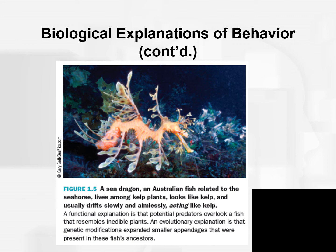One more example, because it comes with a neat picture of a sea dragon — an Australian fish related to the seahorse. It lives among kelp plants, looks like kelp, and usually drifts slowly and aimlessly, so it kind of acts like kelp. The functional explanation, as with many camouflage animals, is that they are camouflaged so potential predators will overlook this animal because the fish looks like inedible plants.